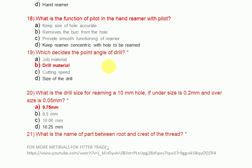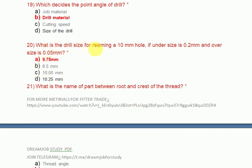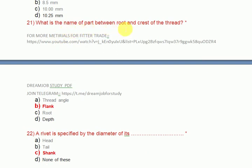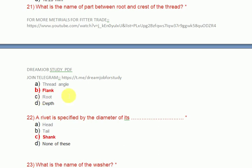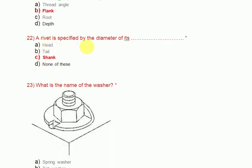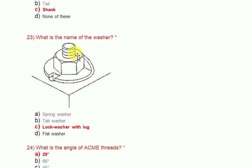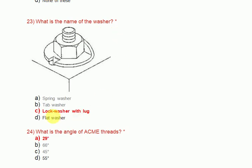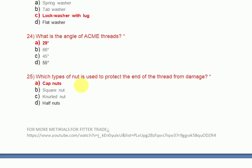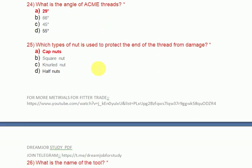Which decides the point angle of a drill? Drill material. What is the drill size for reaming a 10 mm hole if undersize is 0.2 mm and oversize is 0.05 mm? The answer is 9.75 mm. What is the name of the path between the root and crest of the thread? The answer is flank. A rivet is specified by the diameter of its shank. What is the name of the washer? A lock washer with lug. What is the angle of acme threads? 29 degrees. Which type of nut is used to protect the end of the thread from damage? Cap nuts.